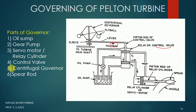The spear rod is present in the system — this is called the spear rod or spear, which we have already discussed. Various pipelines are also present. So these are the major components of the governor of the Pelton turbine: the oil sump, gear pump, servo motor or relay cylinder, control valve, centrifugal governor, spear rod, and pipelines.